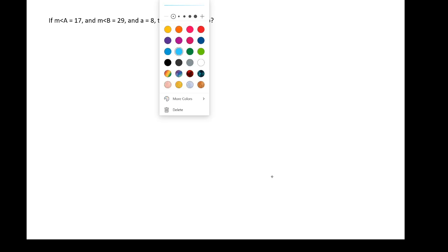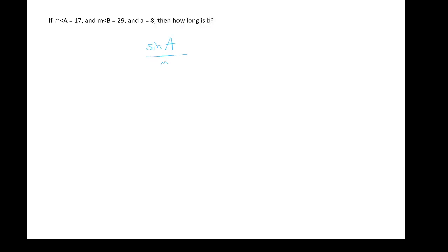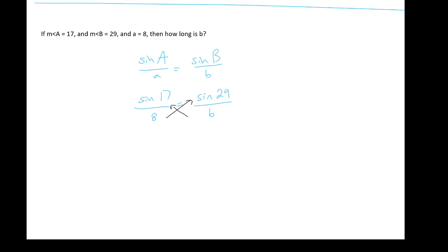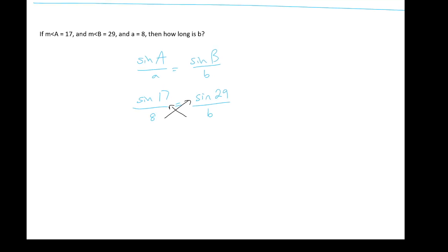This works like this — let's rework our law of sines. We only need two of the ratios: sine of A over a equals the sine of B over b. We have some of these quantities: the sine of angle A is 17°, so sine of 17 over 8 equals sine of 29 over lowercase b, which is what we're solving for. We can take a cross product here: b times the sine of 17 equals 8 times the sine of 29.